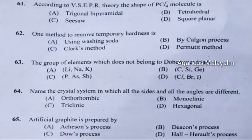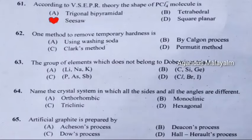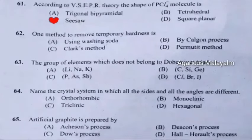Question 61: According to VSEPR theory, the shape of PCl4 molecule is. Correct answer is Option C: Seesaw. Question 62: One method to remove temporary hardness is. Correct answer is Option C: Clark's method.